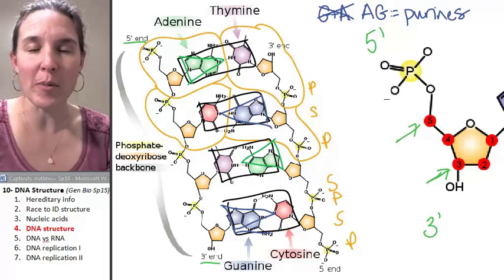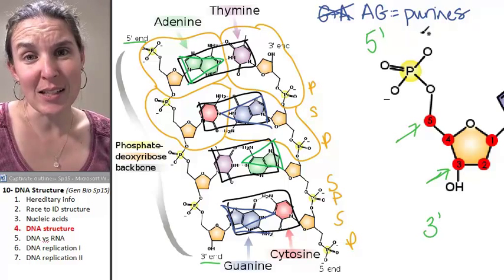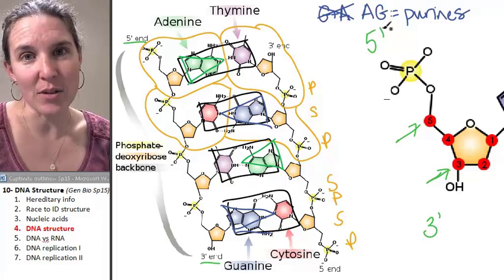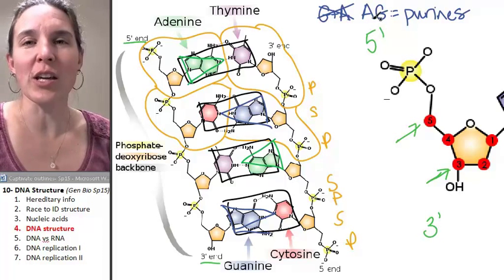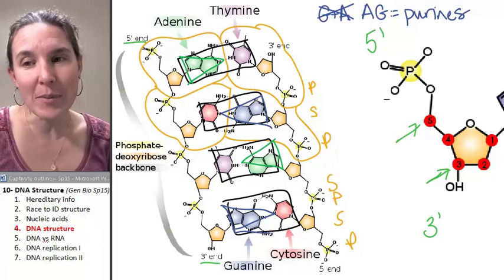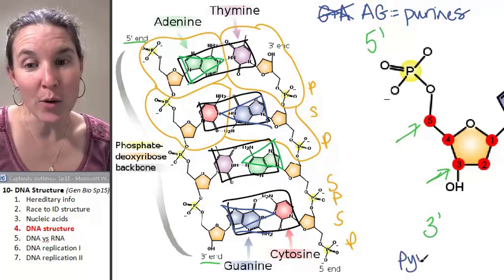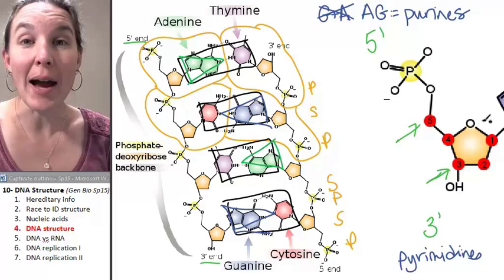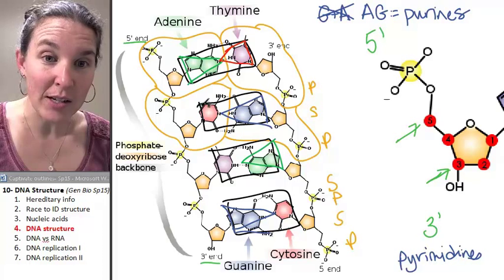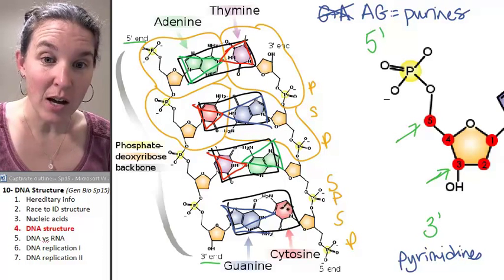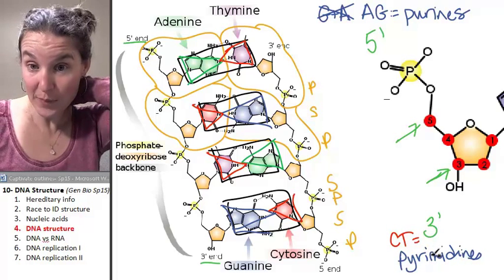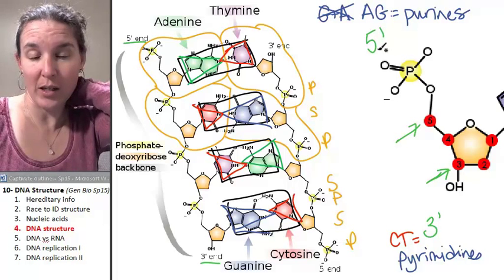Do you want to hear my crazy way of remembering this? Big bases have a short word — purines. And cows are big, and 'ag' makes me think of cows, so AG are my purines. The pyrimidines are the little guys, the little short bases — those are C and T. They are short, but pyrimidine is a long word. I don't know why that works, but it totally does.